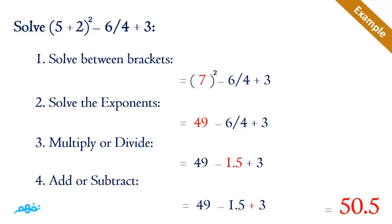We rewrite the expression as 7² − 6/4 + 3. The second step is to solve the exponent: 7 to the power of 2 equals 49. We rewrite it as 49 − 6/4 + 3. The third priority is multiplication or division, and 6 over 4 has the highest remaining priority.